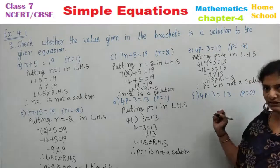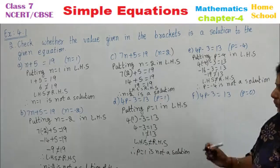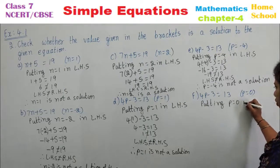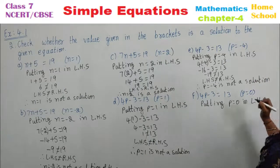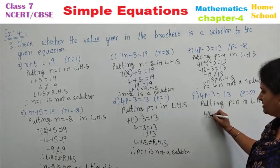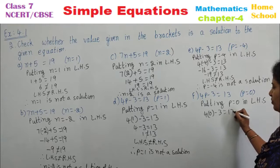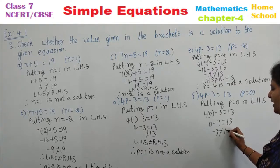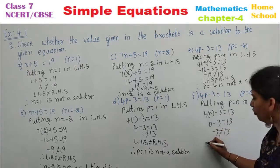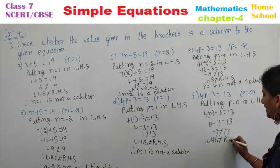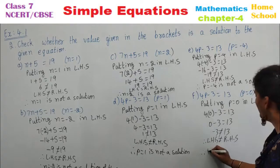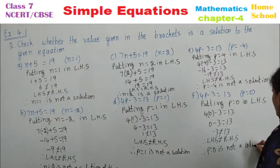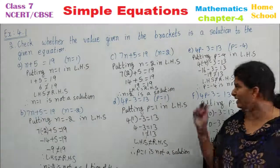Last sub-question: 4p minus 3 equals 13, with p equal to 0. Substitute: 4 times (0) minus 3 — 4 zeros are 0, so 0 minus 3 equals minus 3, and minus 3 is not equal to 13. Therefore, LHS is not equal to RHS, and p equals 0 is not a solution of the given equation.